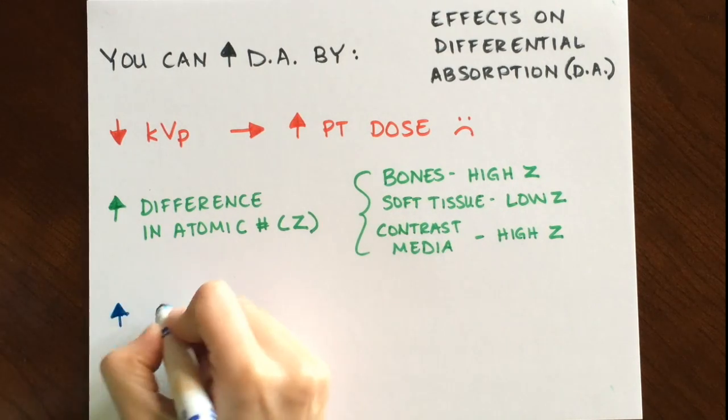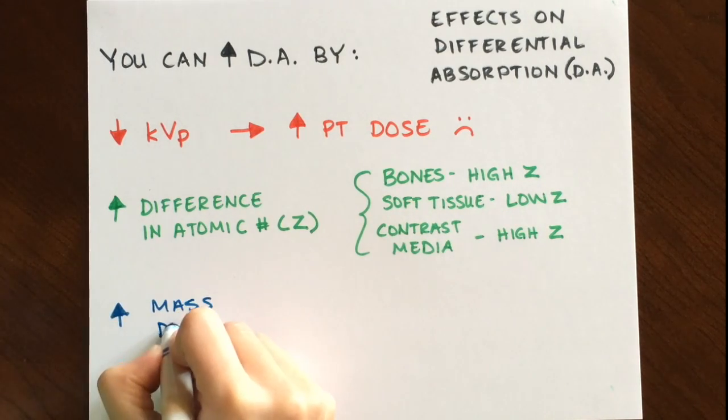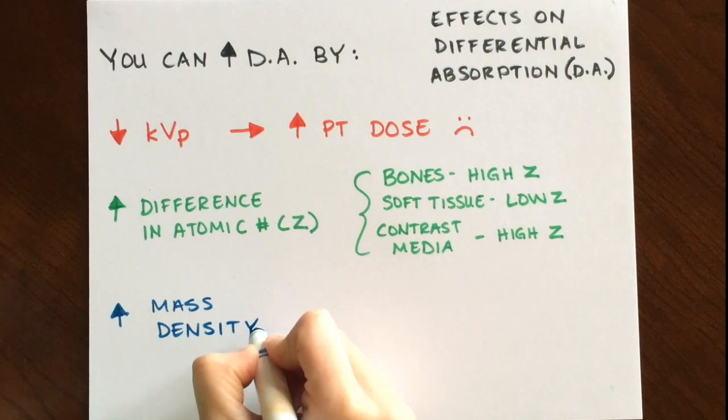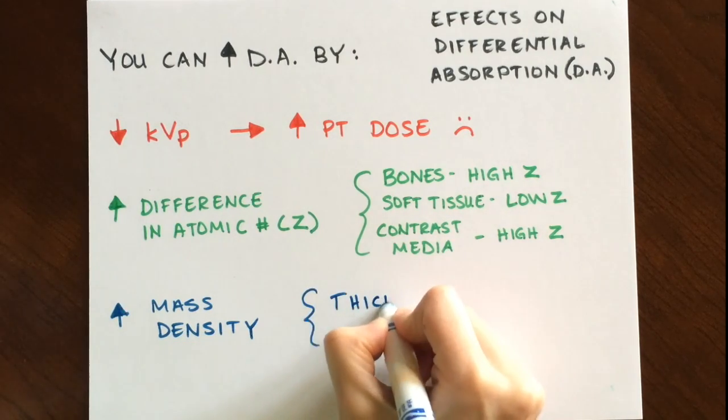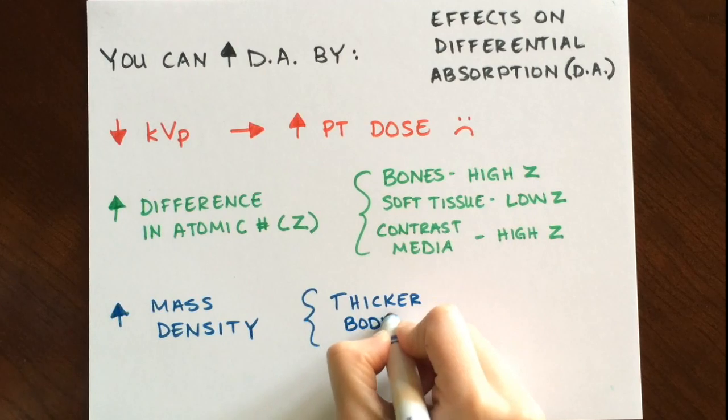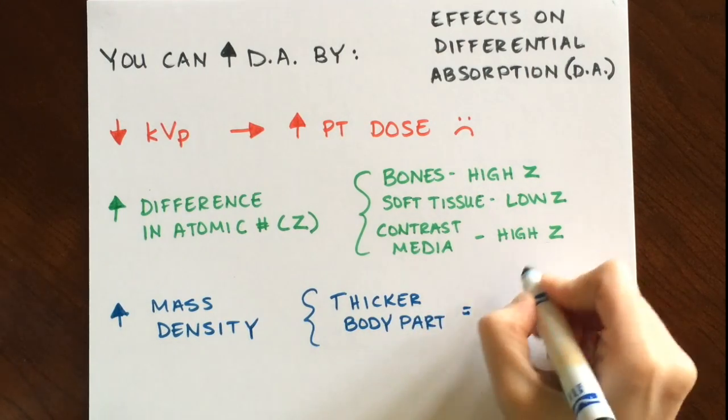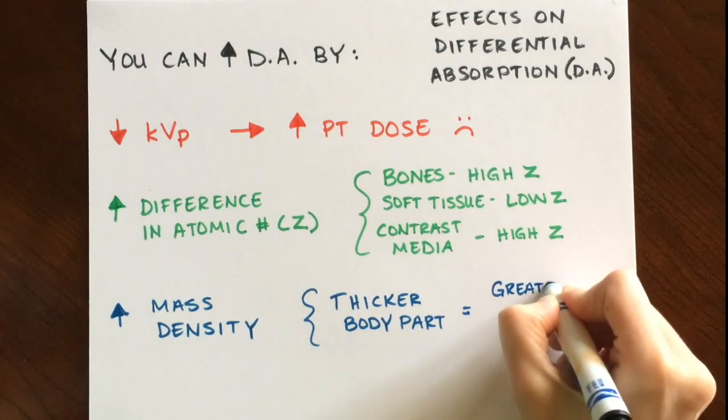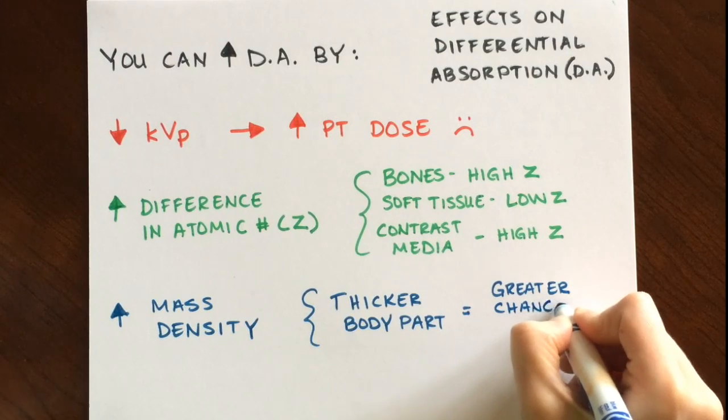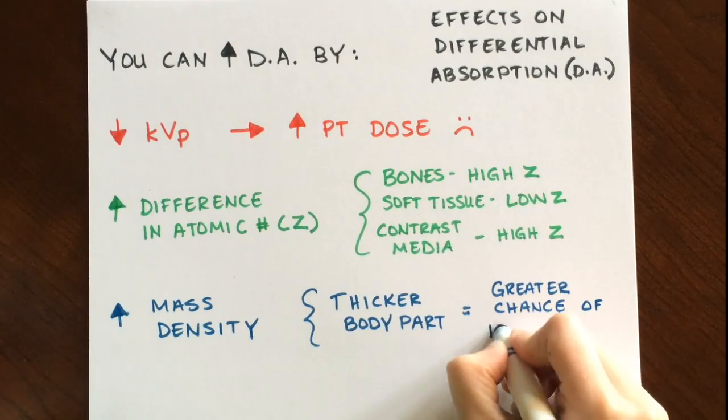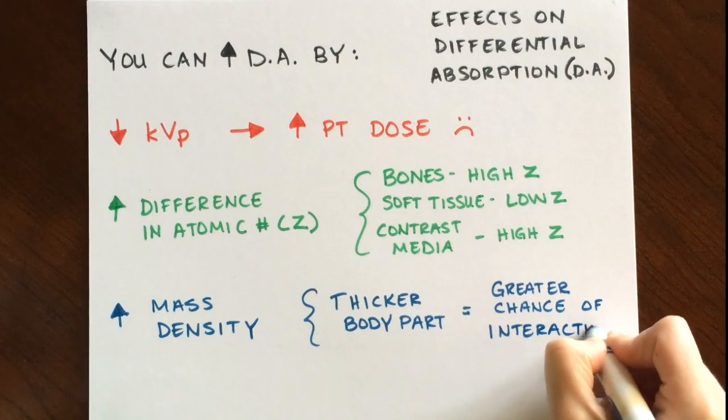Lastly, mass density also affects differential absorption. You can think of mass density as how tightly the atoms are packed together. Intuitively, we know that bony ribs are more dense than air-filled lungs. By increasing the mass density, you increase the amount of x-ray interactions within the tissue and thus increase differential absorption.